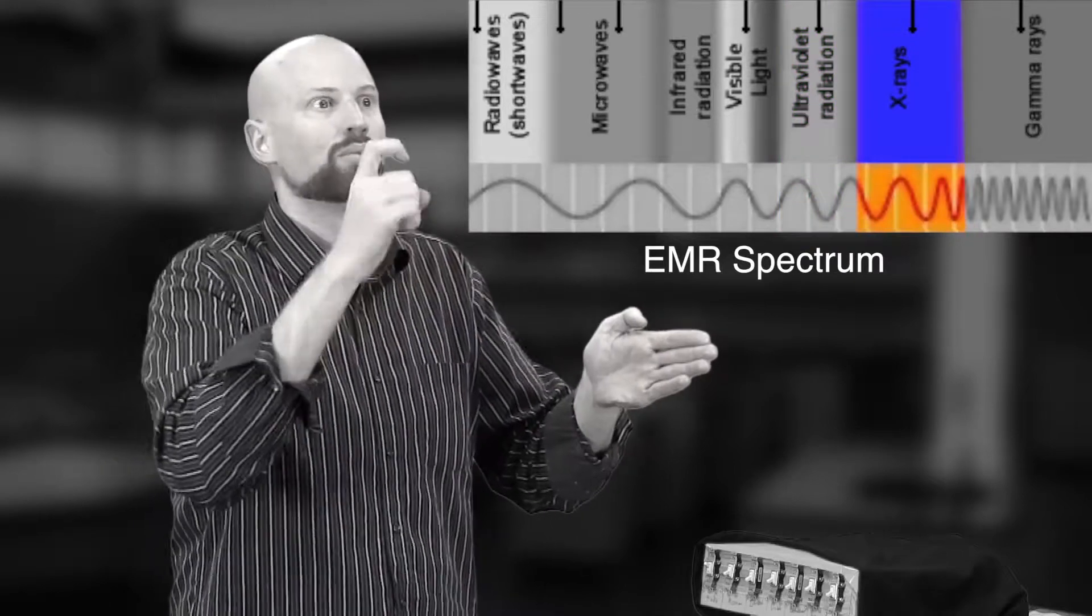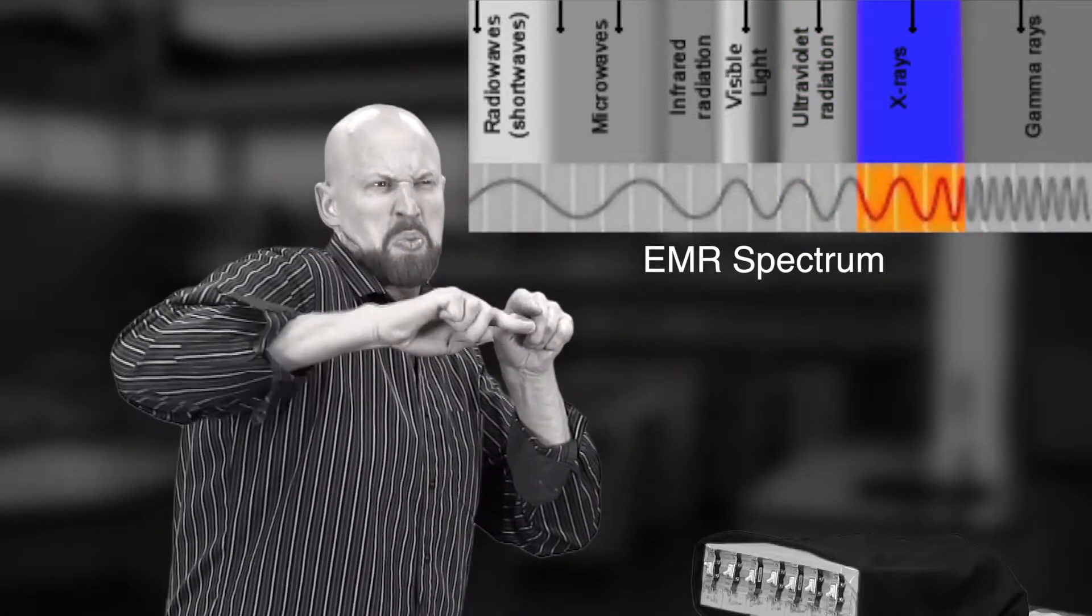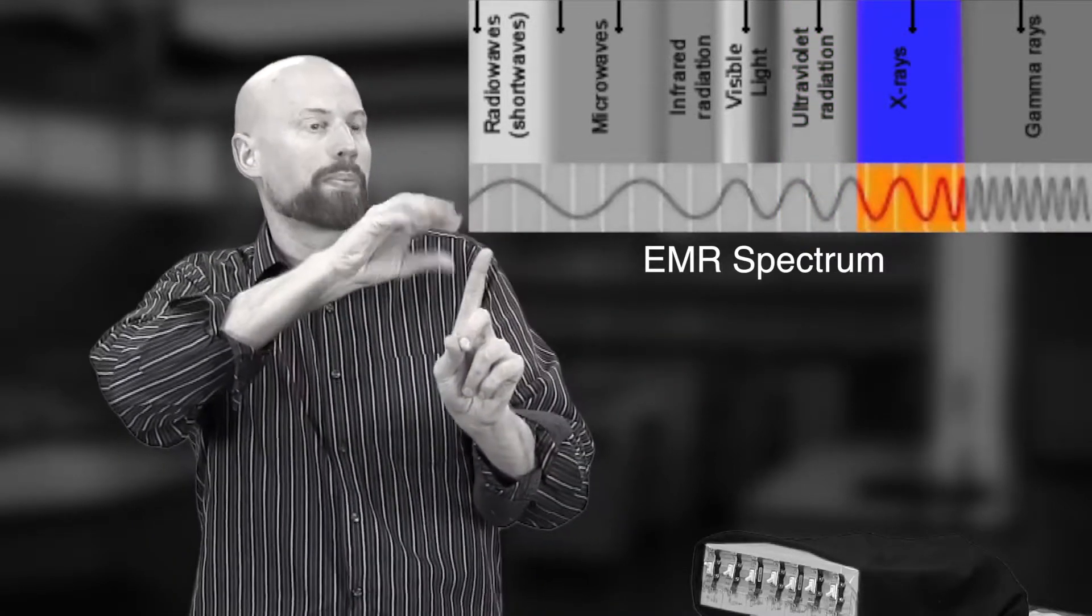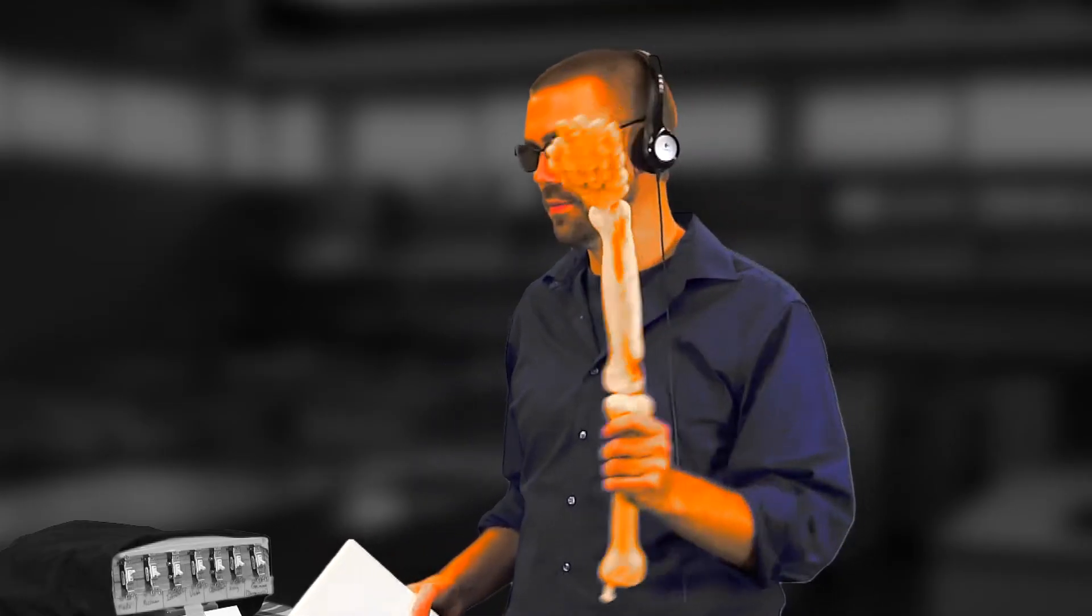Now, x-rays have an even shorter wavelength. This is used in, say, taking photographs of the bones. Ah! Oh! Come on.